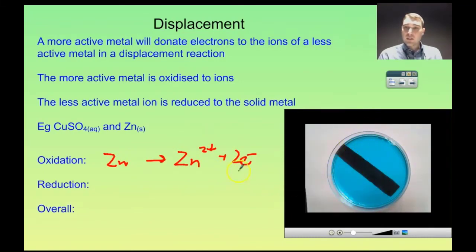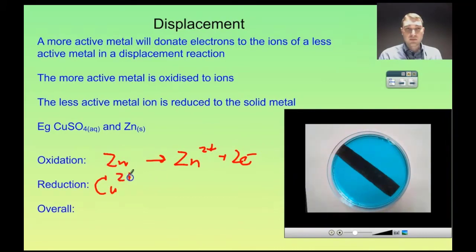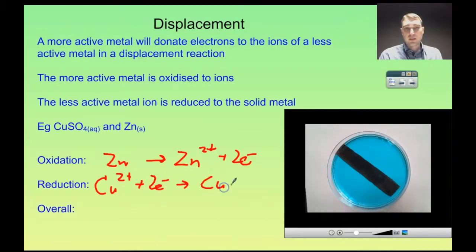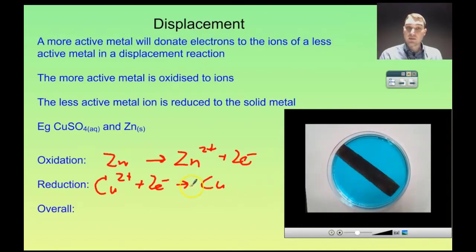The copper ions in the copper sulfate solution are being reduced. In that pretty blue CuSO₄, the SO₄ is 2−, so it's the Cu²⁺ ion. The copper 2+ ion is gaining two electrons and we're producing solid copper — that's what the brown color you're seeing is. Copper metal is brown.